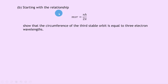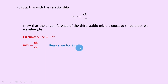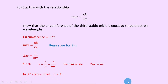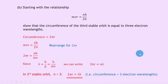Part b says starting with mvr equals nh over 2 pi, show that the circumference of the third stable orbit equals three electron wavelengths. The circumference is 2 pi r. Rearranging mvr equals nh over 2 pi by cross-multiplying gives 2 pi r equals nh over mv. Since lambda equals h over p equals h over mv, we can replace h over mv with lambda, giving 2 pi r equals n lambda. For the third stable orbit n equals 3, so the circumference equals 3 lambda — three electron wavelengths.